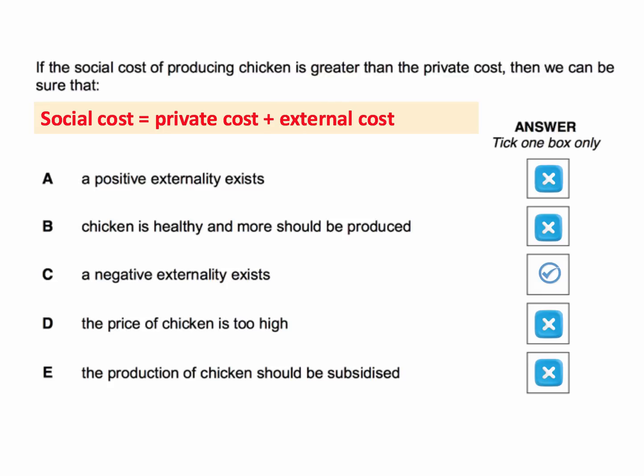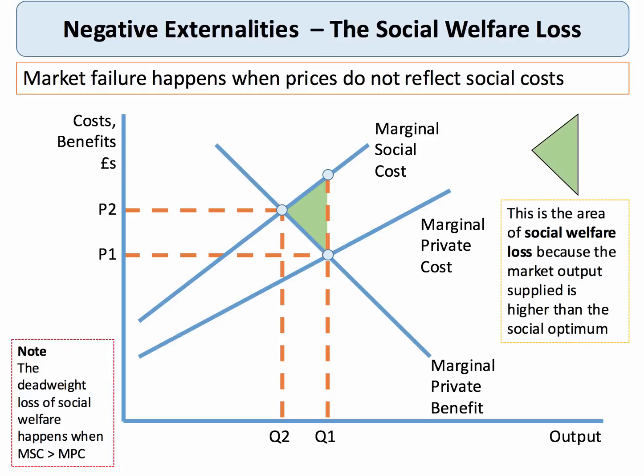So the answer is C. Quick reminder about negative externalities: negative externalities cause the marginal social cost of production to be greater than the marginal private cost.